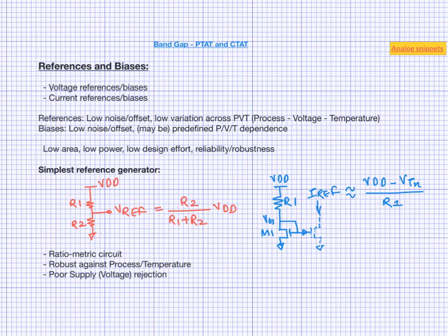Here we have replaced R2 by a diode connected NMOS transistor. Now it is not obviously a ratio metric circuit, so its process and temperature performance is not as impressive as this resistor divider.